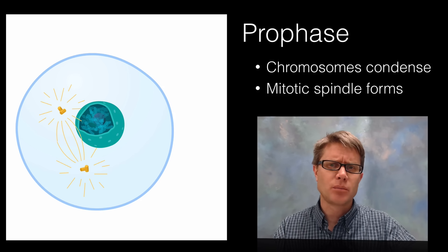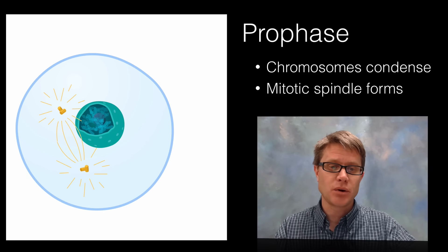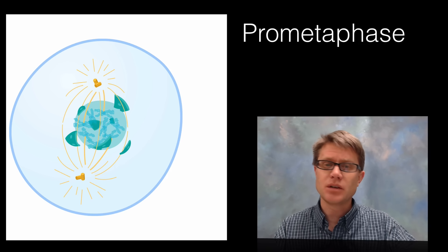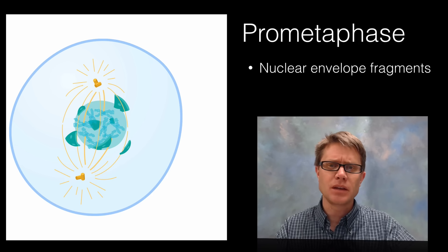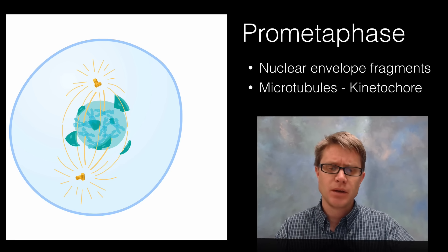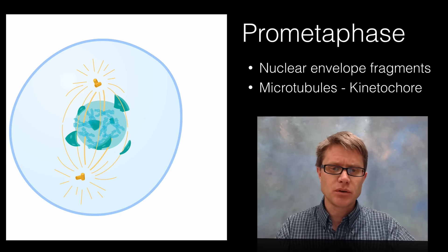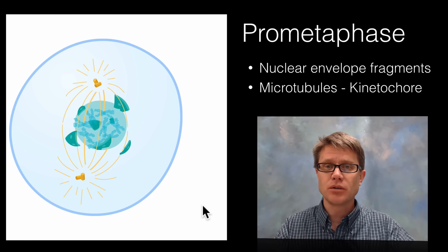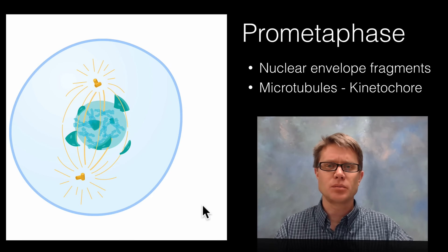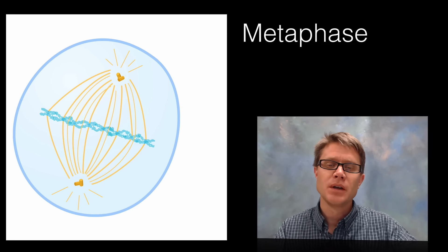Next is pro-metaphase. The big things that happen: you can see right away that the nuclear envelope is fragmenting — breaking apart. The other big thing is that microtubules start attaching to the kinetochores in the middle, though not all of them — some are reaching all the way across the cell. You know it's pro-metaphase when you see that explosion of the nuclear envelope.